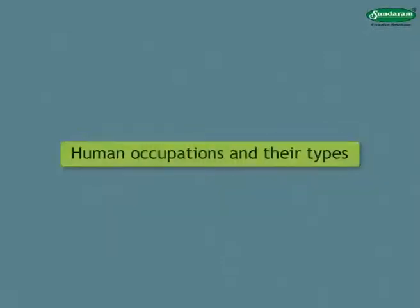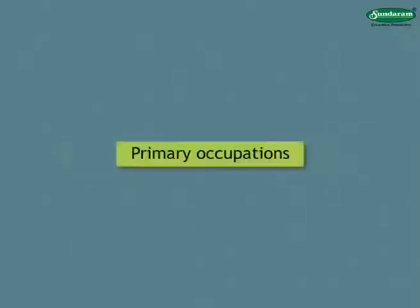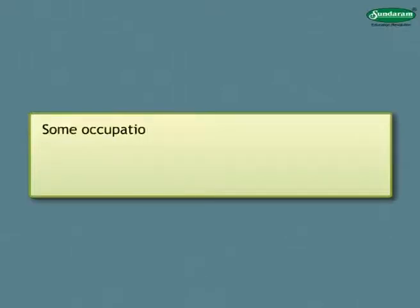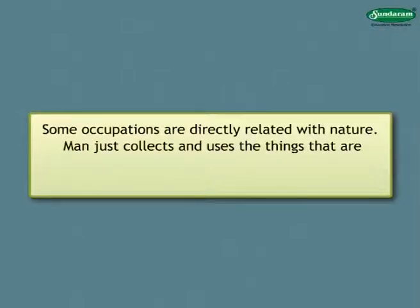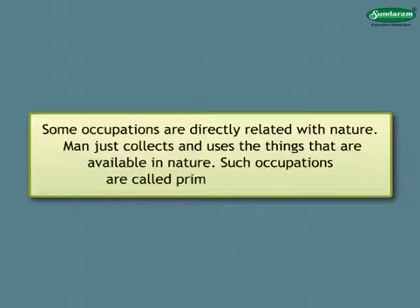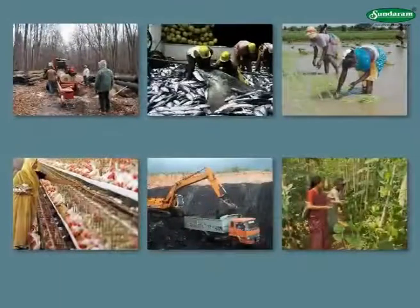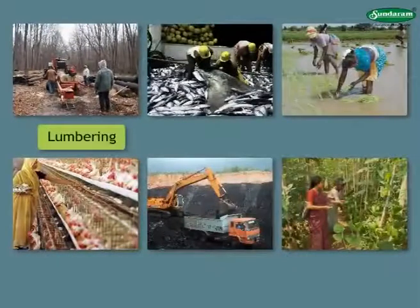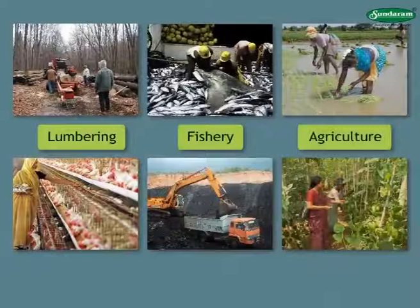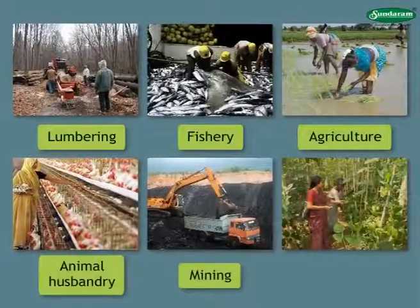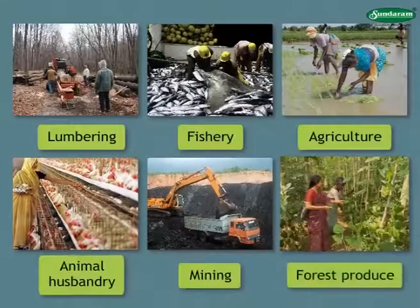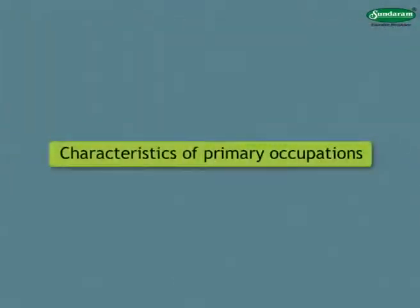Let us try to know more about human occupations and their types. Primary occupations: Some occupations are directly related with nature. Man just collects and uses the things that are available in nature. Such occupations are called primary occupations. For example, lumbering, fishery, agriculture, animal husbandry, mining, collection of forest produce, etc.